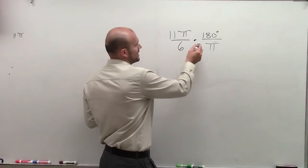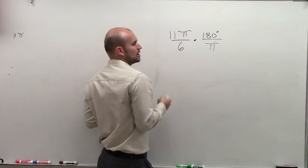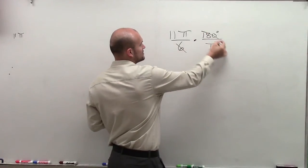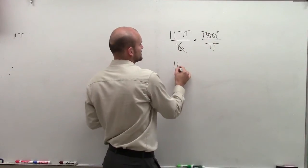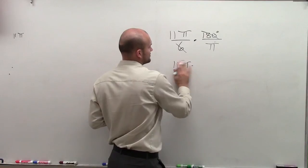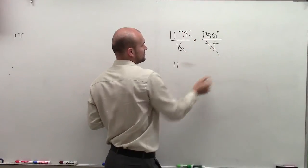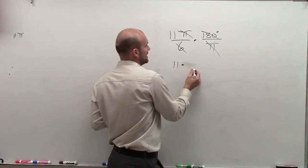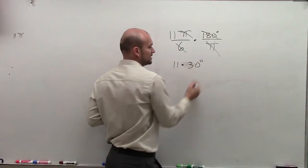So to do this, what I like to do is instead of multiplying 11 times 180 then dividing by 6, I know that I can reduce this and make that 30 degrees. The pi's also are going to divide out, so I have 11 times 30 degrees.